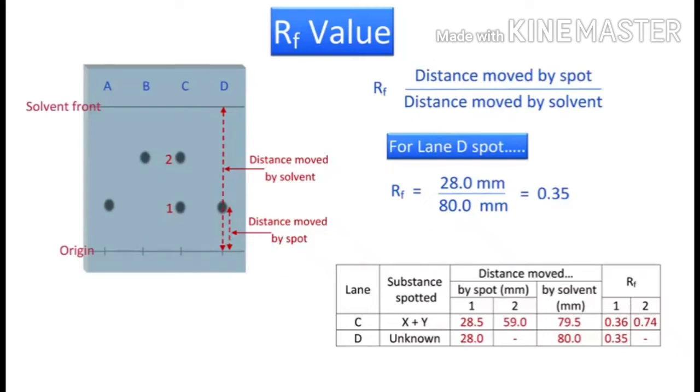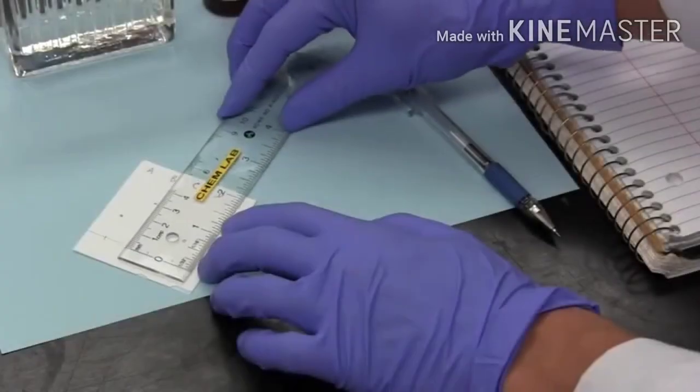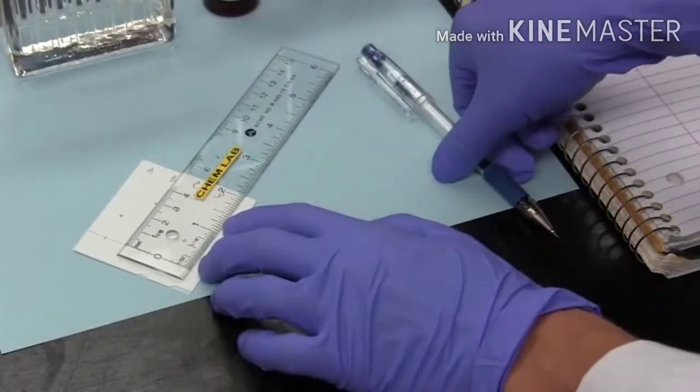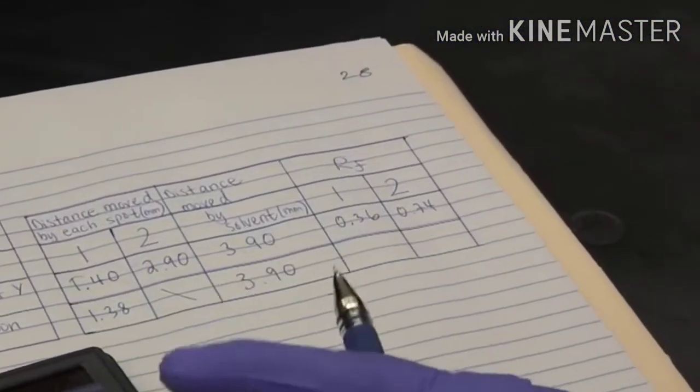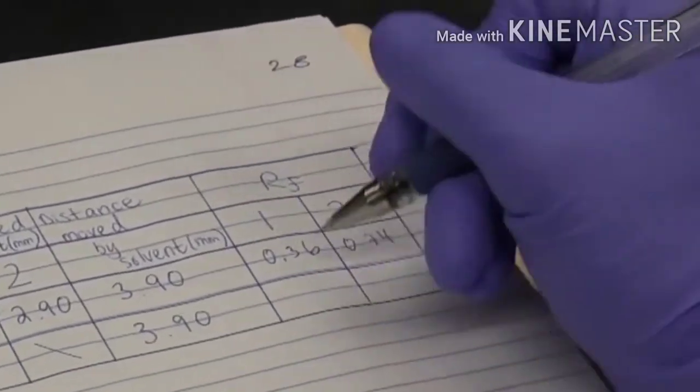In this example, the RF of 0.35 for the single spot in lane D compares favourably to the RF of standard X in lane C, so we can confirm that the unknown was in fact compound X. Here we see the measurements being made and recorded in the notebook. RF values calculated and also recorded.